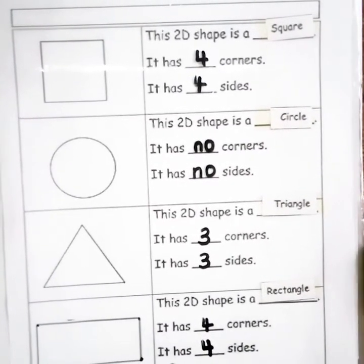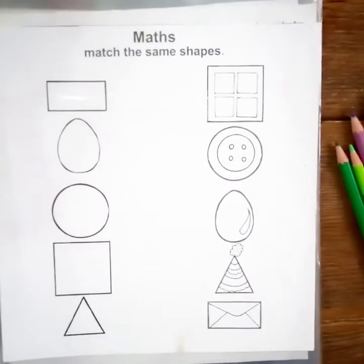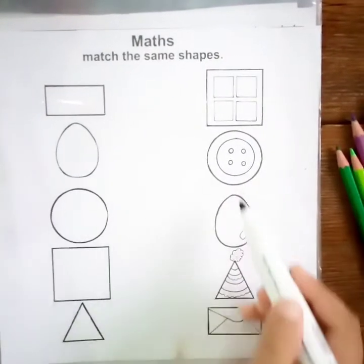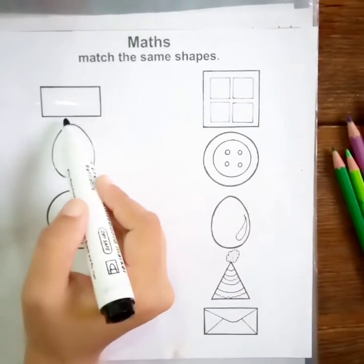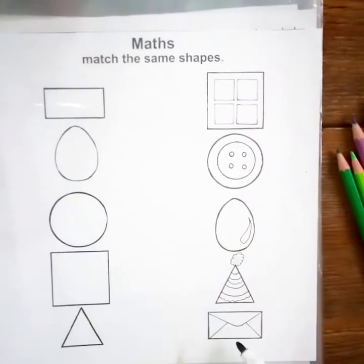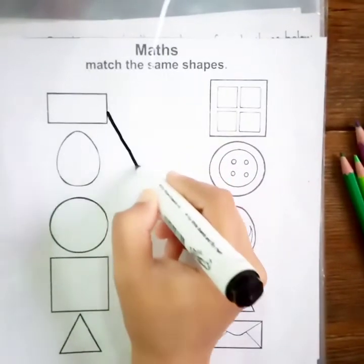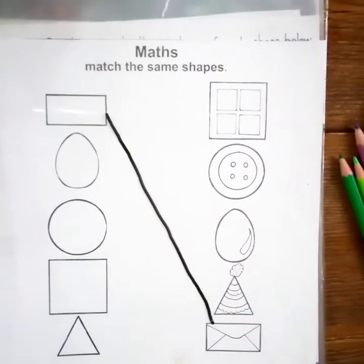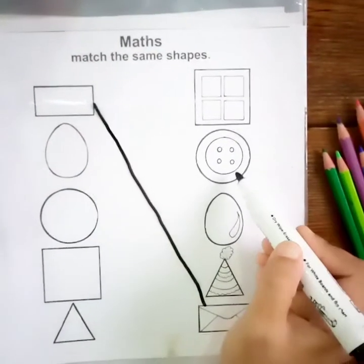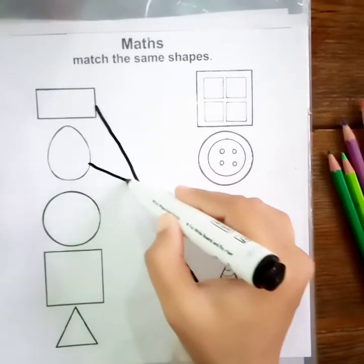Now move towards the next worksheet: match the same shapes. It's a very interesting activity — we are going to match shapes with resemblance objects. Which shape is this? Rectangle. Is this window look like a rectangle? No. Is this envelope look like a rectangle? Yes. Now we match rectangle with this envelope. Which shape is this? Oval. Is this oval? Yes. Now match the same shapes.